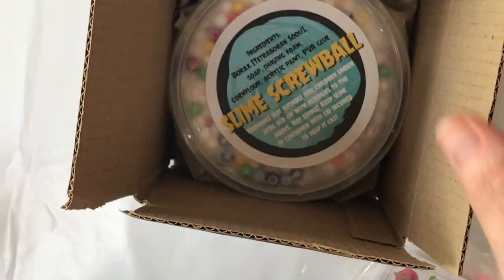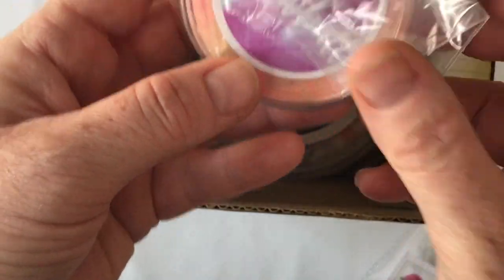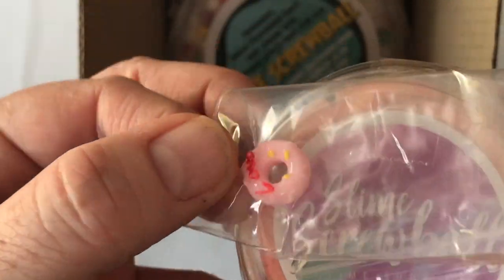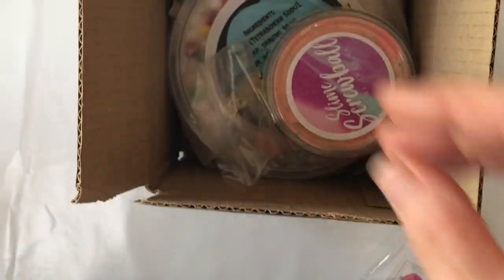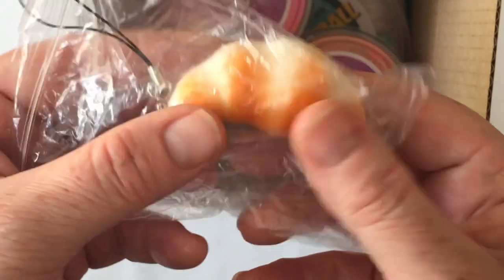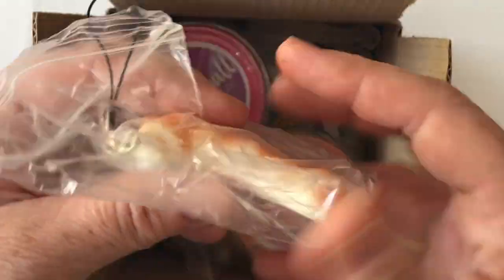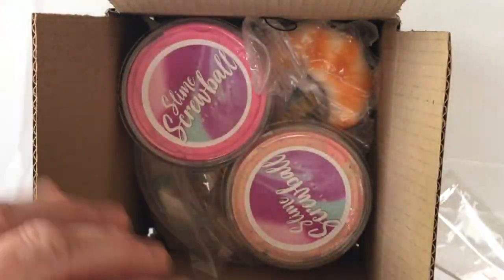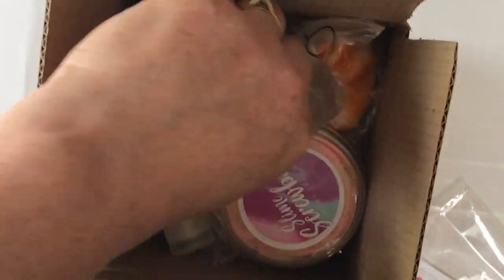So she gets an eight ounce cereal milk slime, four ounce donut sprinkled with a little charm, a strawberry shake slime four ounces, and this really nice little slow rising squishy of a croissant. She also gets 15 mils of borax and of course extras.